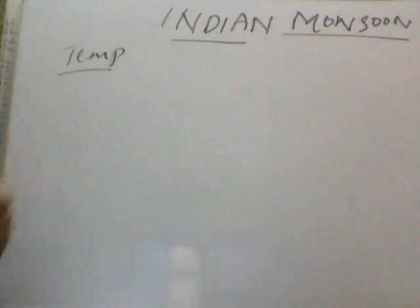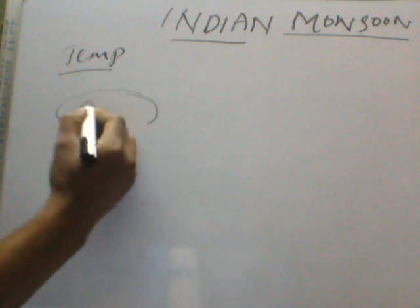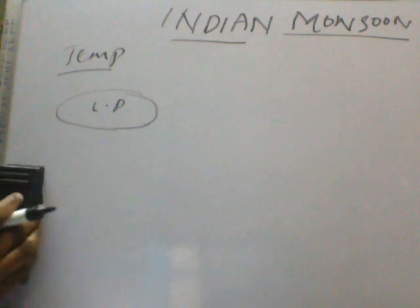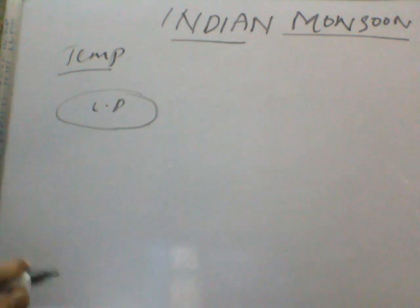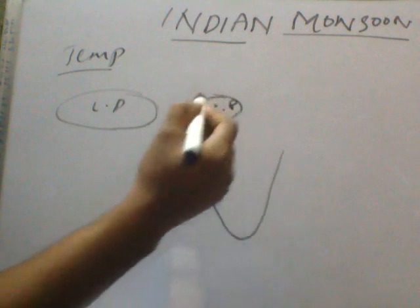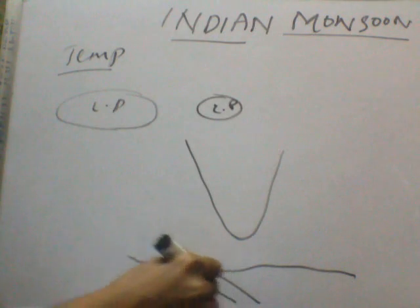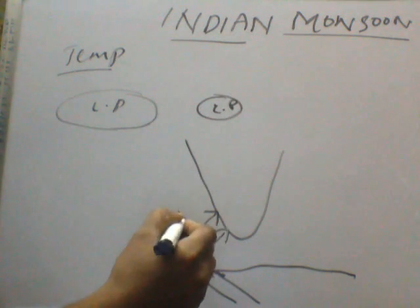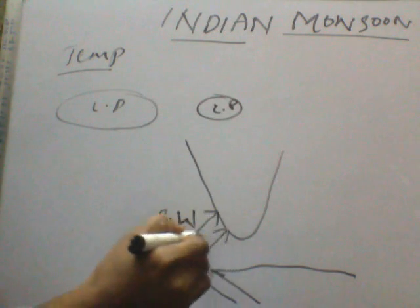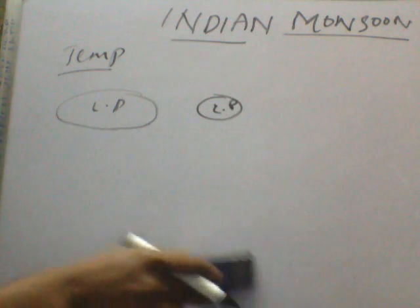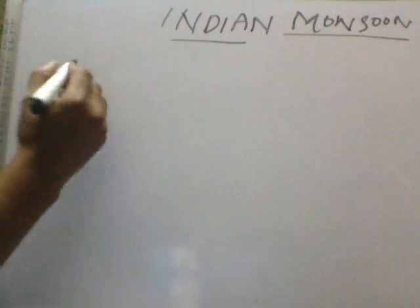Firstly, coming to temperature. In the northern and northwestern parts, temperatures are very high, which creates low pressure. However, this low pressure is not enough for the monsoon winds to come into the Indian subcontinent. The winds from the equator come from the Australian region, but because of the Coriolis force they turn — that is why we call it the southwest monsoon. It divides into the Arabian Sea branch and the Bay of Bengal branch.